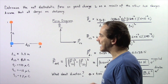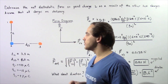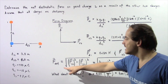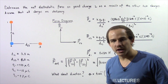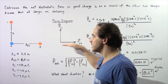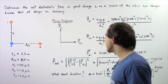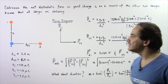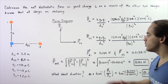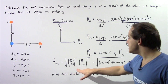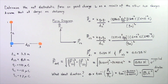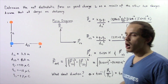The net force acting on point charge number two is found by taking the square root of the sum of the squares of the two component forces — one along the x-axis and one along the y-axis. So the net electrostatic force equals the square root of 0.120 newtons squared plus 0.0135 newtons squared, which gives approximately 0.121 newtons. This is the magnitude of our net force.